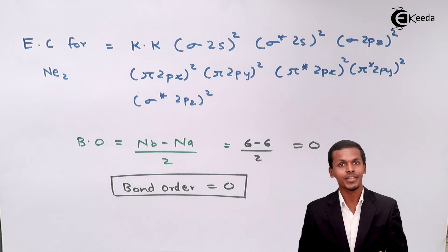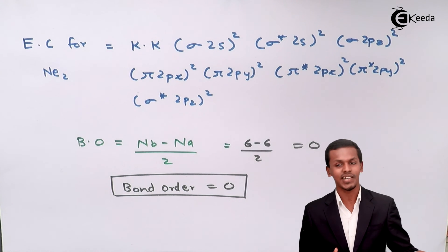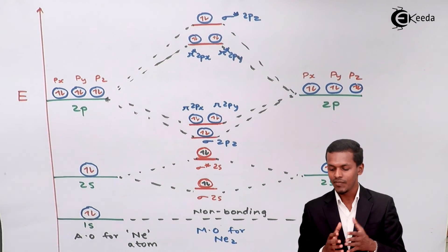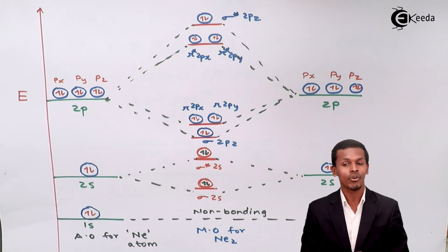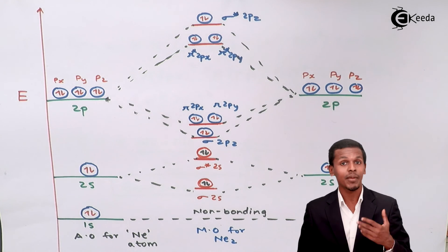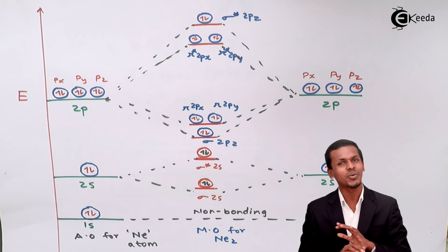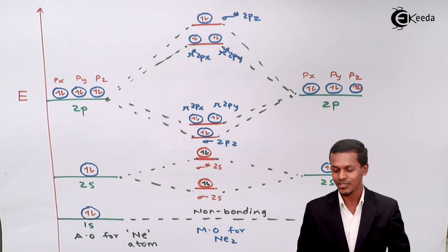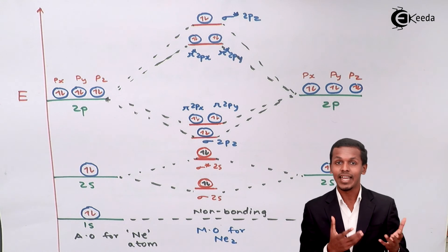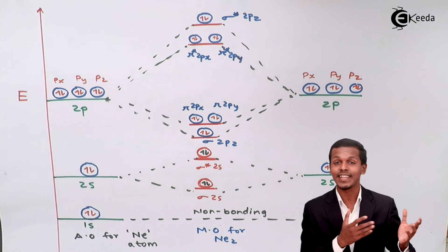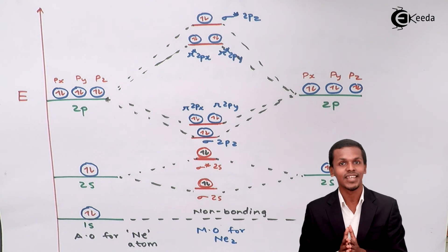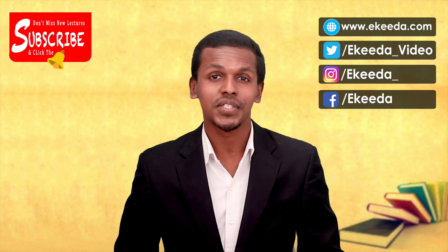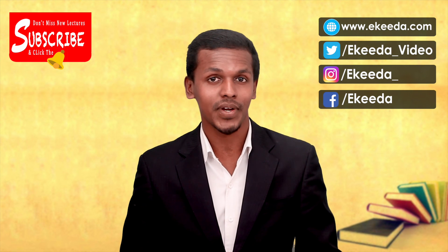So we have represented the electronic configuration for the neon molecule, which gives detail about the energy levels and the difference in energy when two atoms combine. We also discussed the bond order. Regarding diamagnetism and paramagnetism: there are no unpaired electrons, so neon molecules are diamagnetic in nature. Similarly, fluorine also had no unpaired electrons and is therefore diamagnetic. Thank you friends for watching; I hope you understood this video clearly. Please share it and don't forget to subscribe.